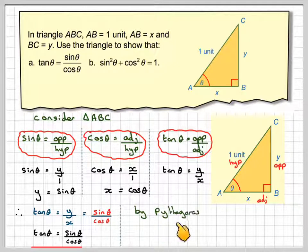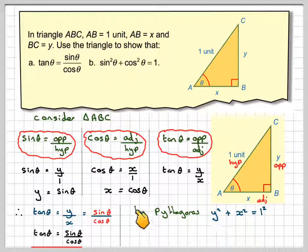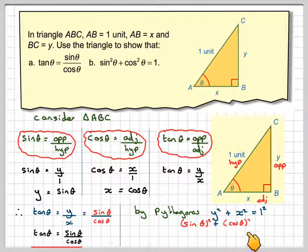Secondly, by Pythagoras theorem, y squared plus x squared is going to be equal to 1 squared. But y is in fact sin θ, so it's going to be sin θ all squared, plus x, which is cos θ. X squared becomes cos θ squared, is equal to 1 squared, which is 1.